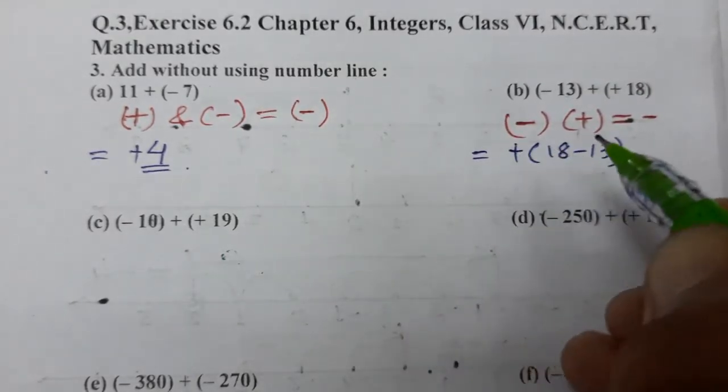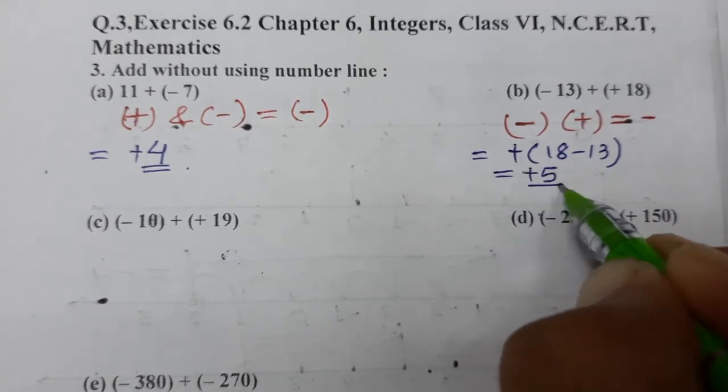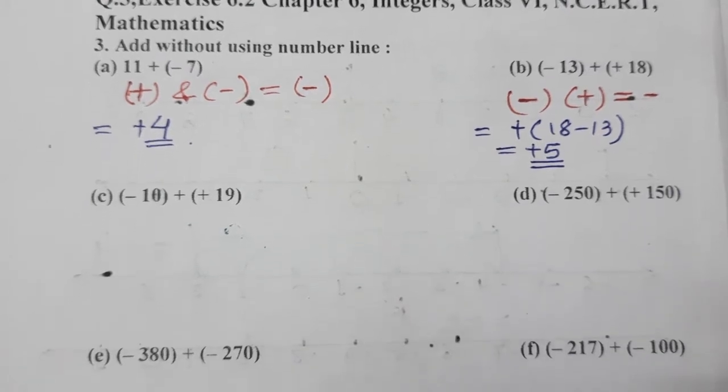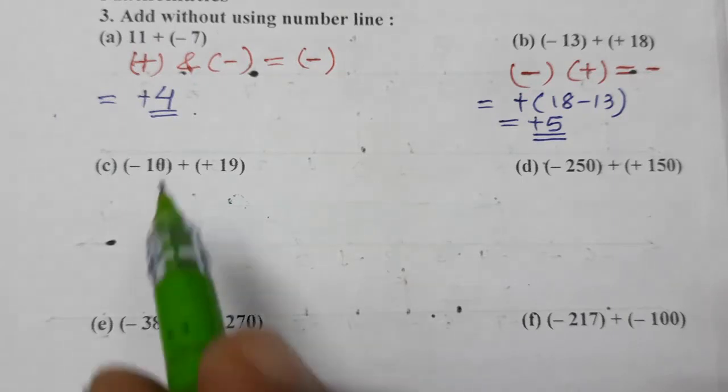So we will put plus here. So 18 minus 13 is 5, so plus 5 is done. We can also write simply 5 because plus 5 and simple 5 is same.